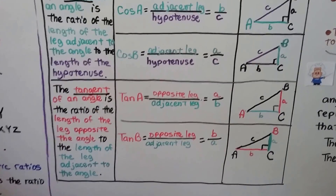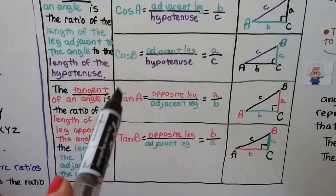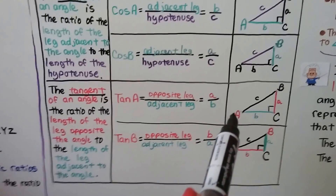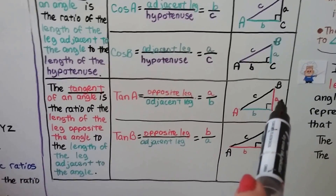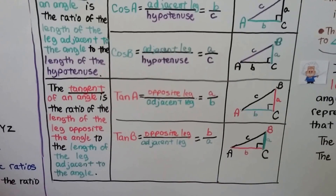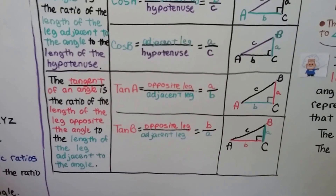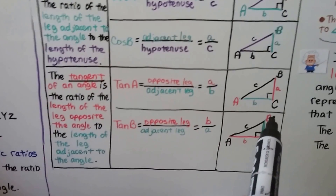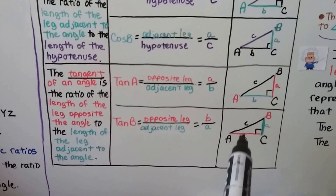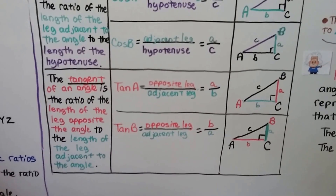The tangent of an angle is the ratio of the length of the leg opposite the angle to the adjacent leg. So the tangent of A would be this opposite leg over the adjacent leg — the one next to it. And the tangent of B: the leg opposite it would be this one, over this one — opposite leg over adjacent leg.